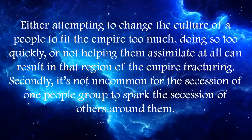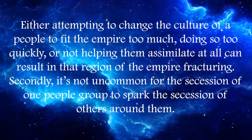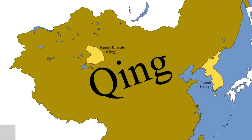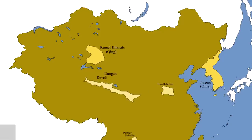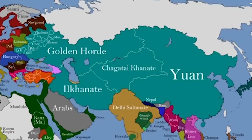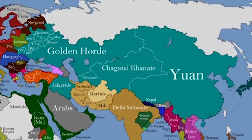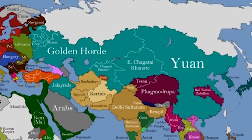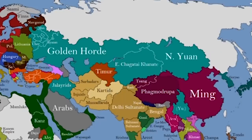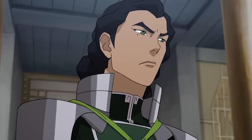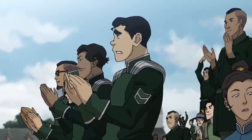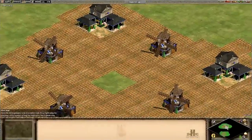It's not uncommon for the secession of one people to spark the secession of others around them — this is why empires tend to fracture a little bit, then a little more, and then all at once. This is what we saw with the later Mongol khanates, as people saw others around them rebelling and wished to reassert control of themselves too, never having truly assimilated into the Mongol Empire. Fundamentally, all of these different strategies come down to the most important thing an empire needs: preferentiality.